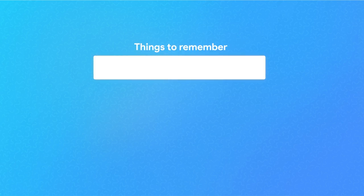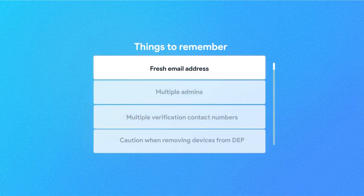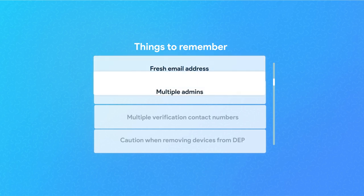There are a few things you should remember. Use a fresh email address — the email address you provide will be used to create a new Apple ID, so make sure it is not already associated with any other Apple services. It would be better if you use a group email instead of a personal email address. Also, add multiple admins. In case the one person who manages the company DEP account is not available, you shouldn't be in trouble, so add more than one admin to manage the account.